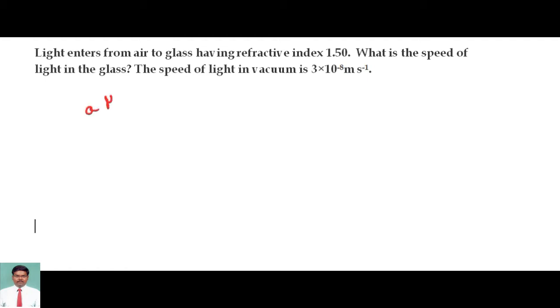A mu g will be equal to 1.5. A mu g represents the light is going from air to glass. The refractive index when writing for light moving from air to glass is 1.5.